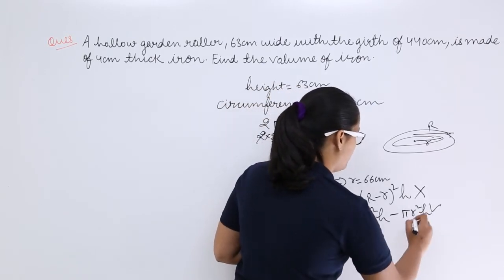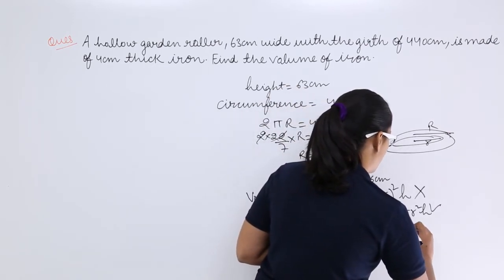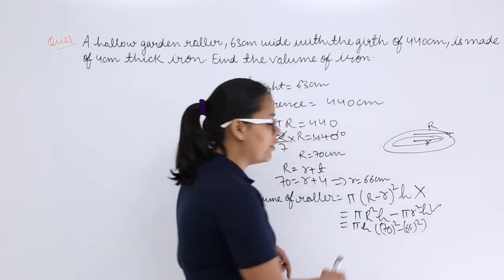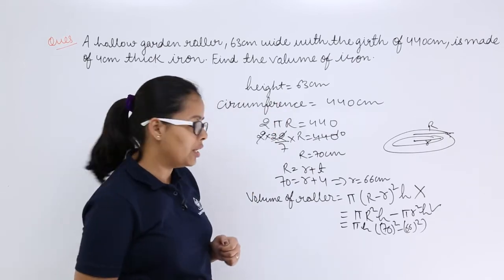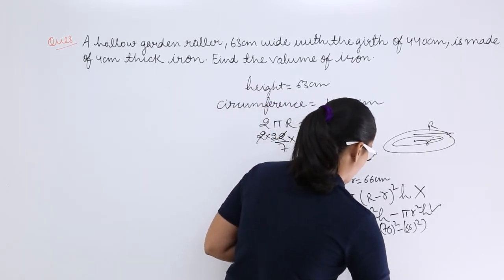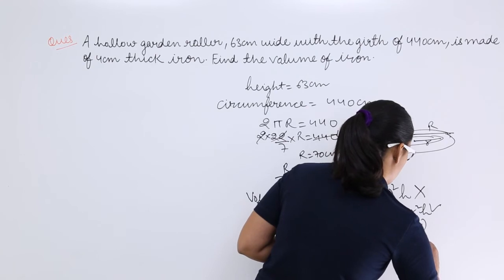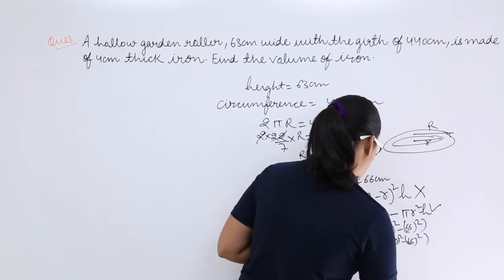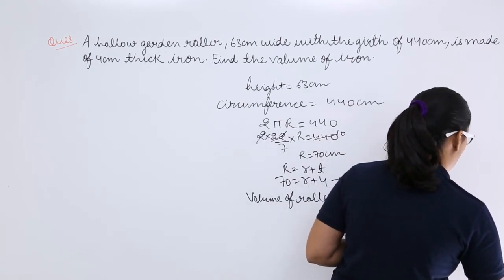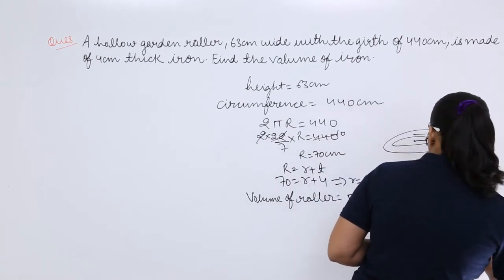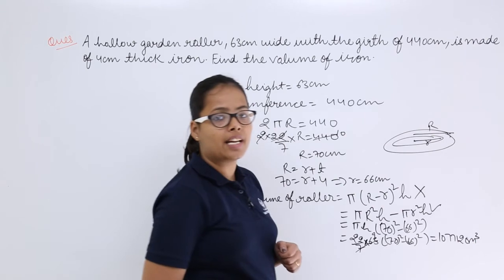Taking π and h common: volume equals π times h times (R squared minus r squared). Capital R is 70 and small r is 66. The value of pi is 22 by 7, and the height is 63 centimeter. So it is 22 by 7 into 63, times (70 squared minus 66 squared). When you evaluate this expression, you get 107712 centimeter cube.